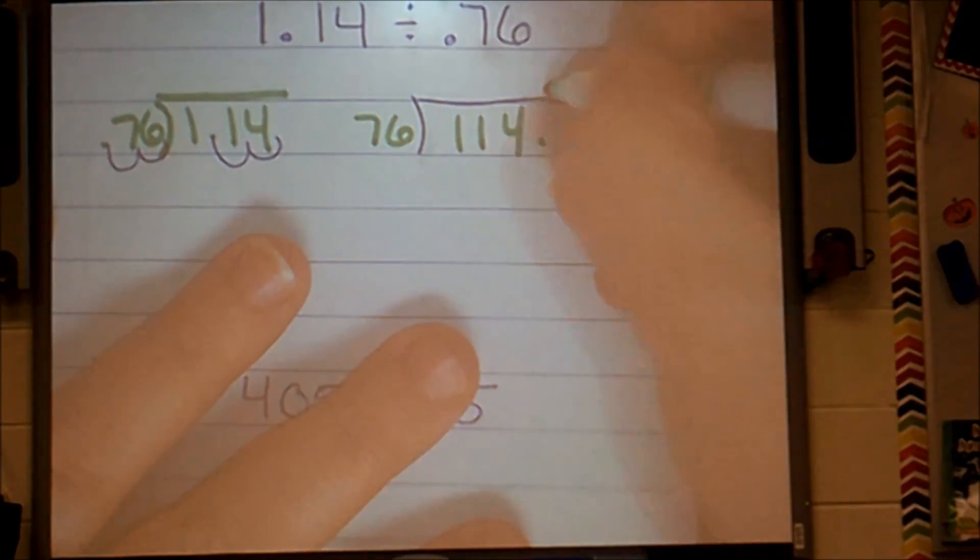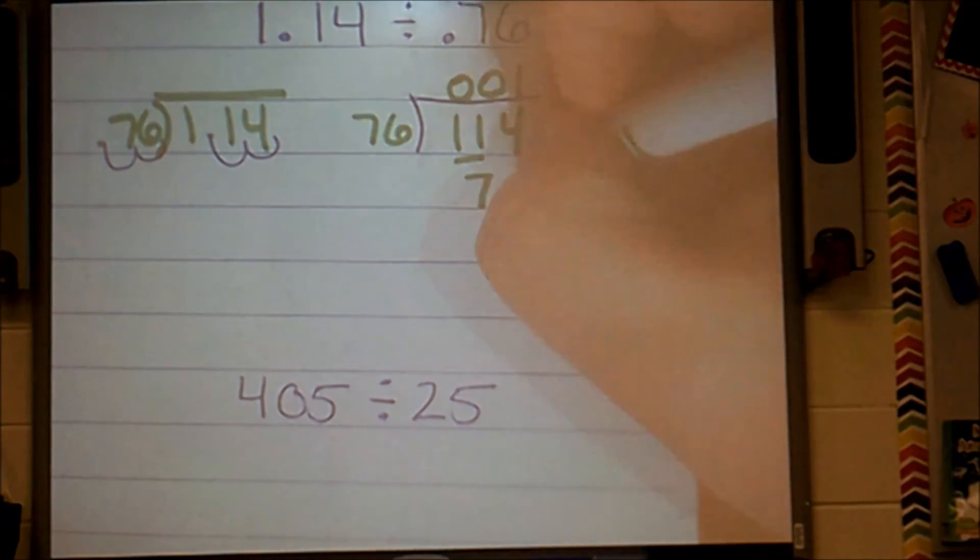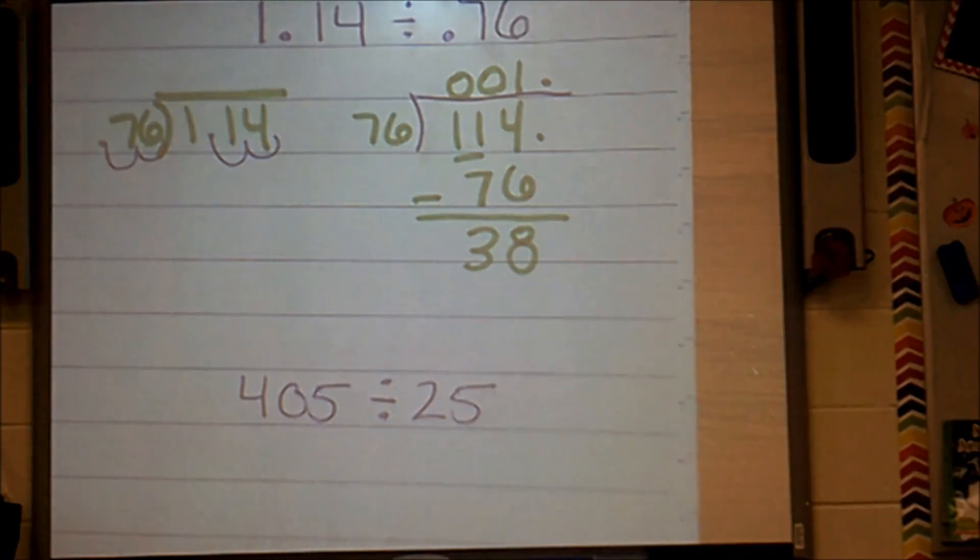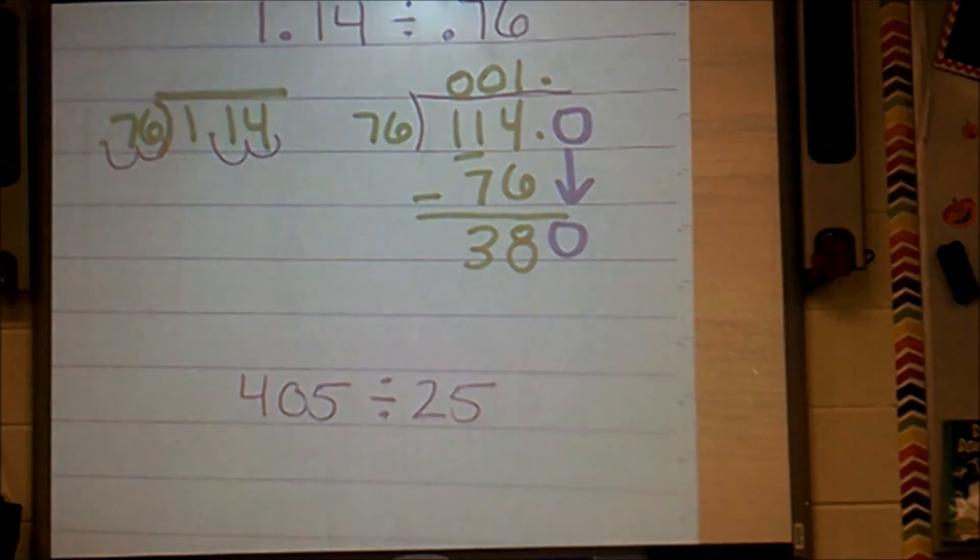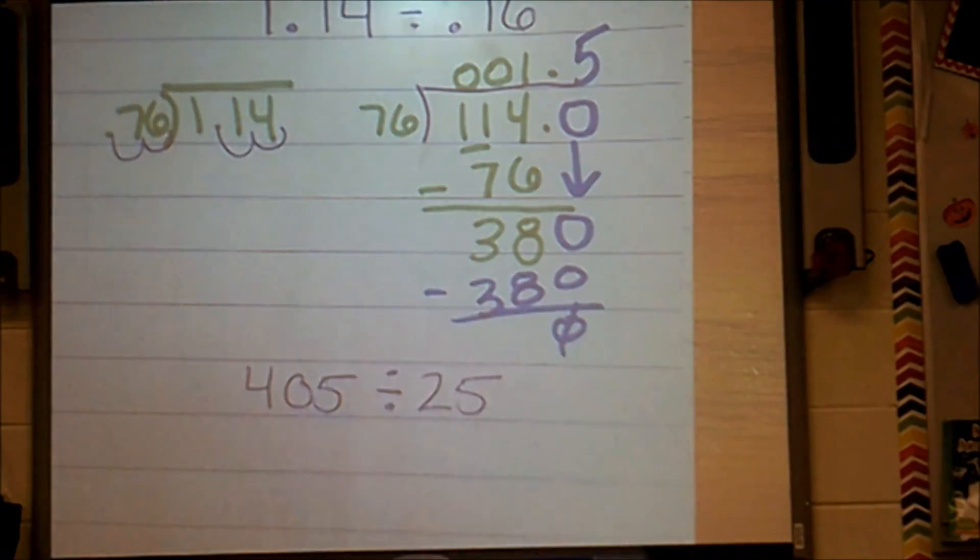I'm going to break my decimal up just in case. And can 76 go into 114? It can go in one time. Then I multiply and I subtract. From there I'm going to pull out my handy dandy zeros, and that will help me to solve my problem. And my answer is complete.